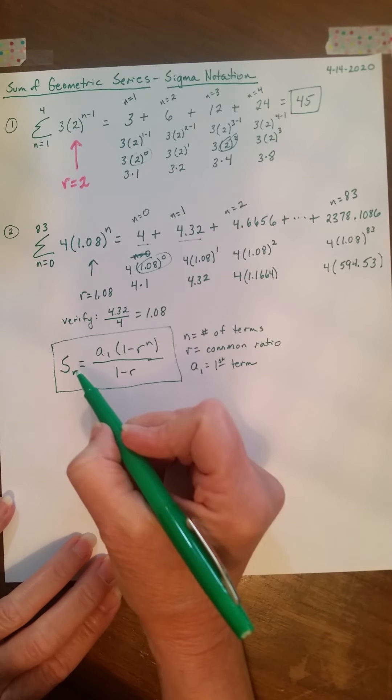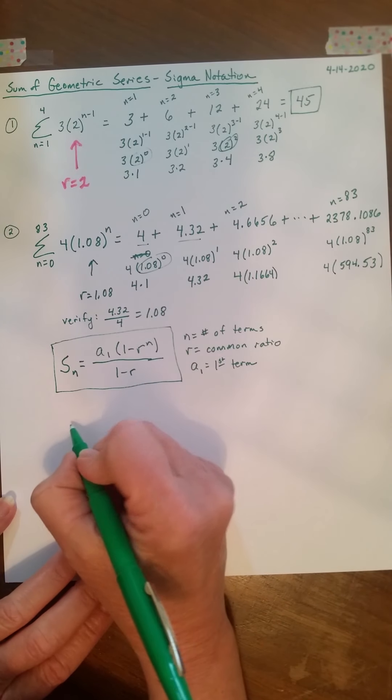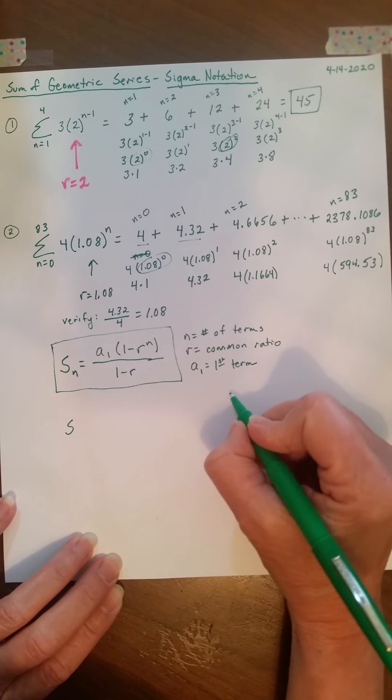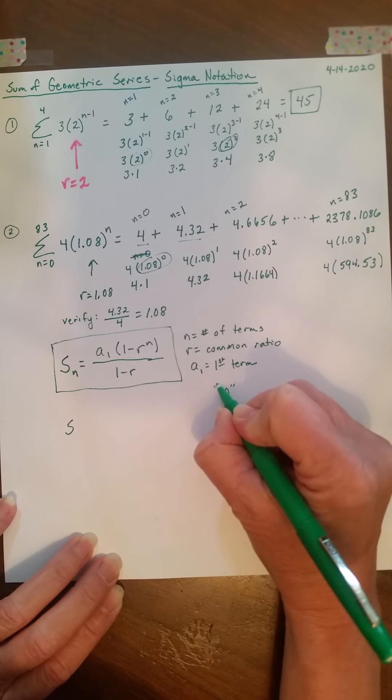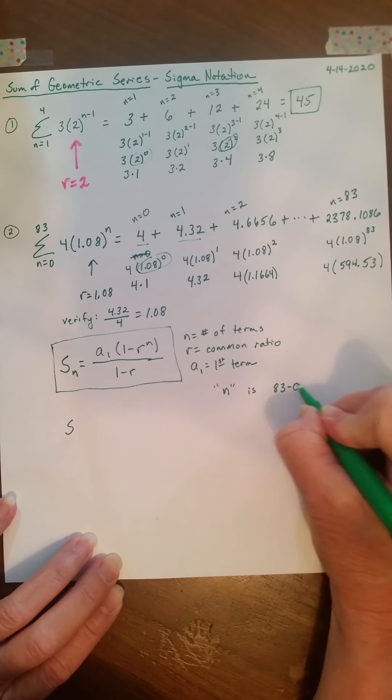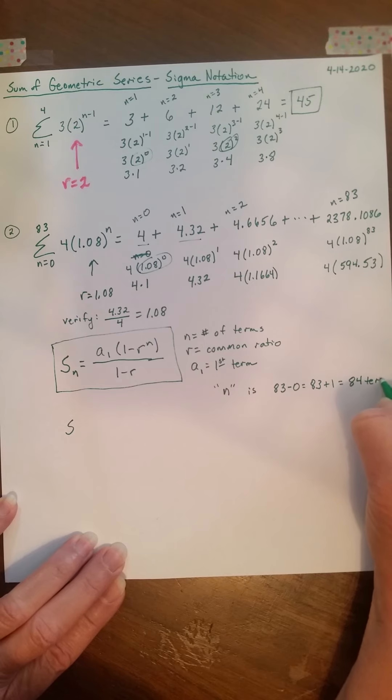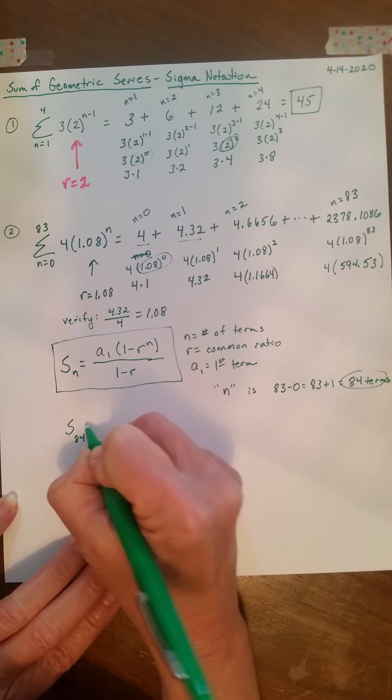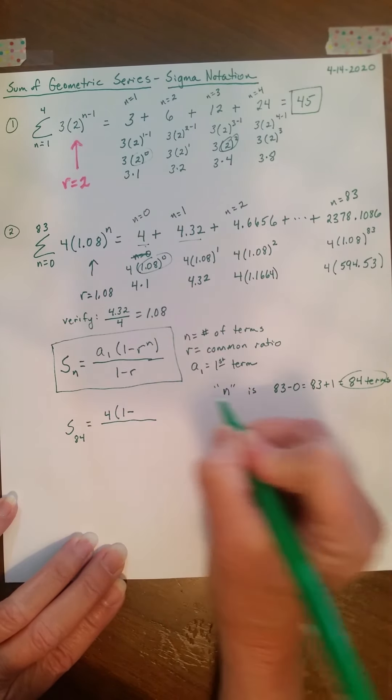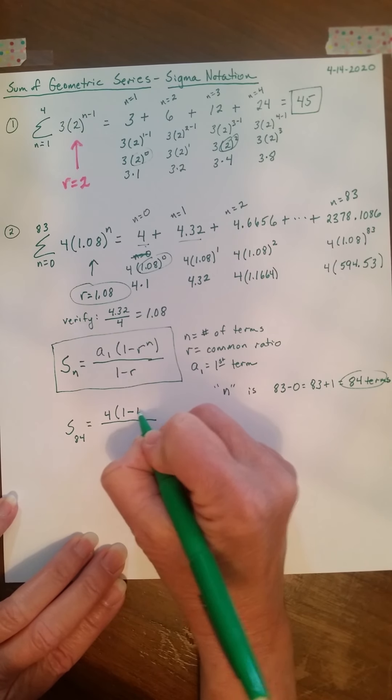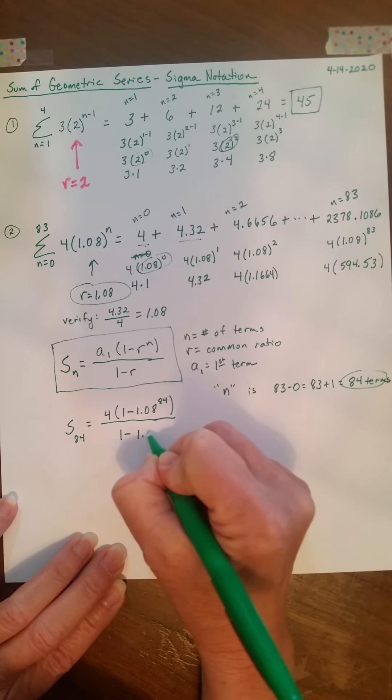Okay, so, I'm going to use this formula to find the sum of this problem. So, s sub... Now, the number of terms is... So, n, in this case, is 83 minus 0, which is 83, and then plus 1, because it's inclusive. So, in this case, I have 84 terms. So, s sub 84 is the first term right here, 4, times 1 minus my ratio, 1.08, to the 84th, all over 1 minus 1.08.